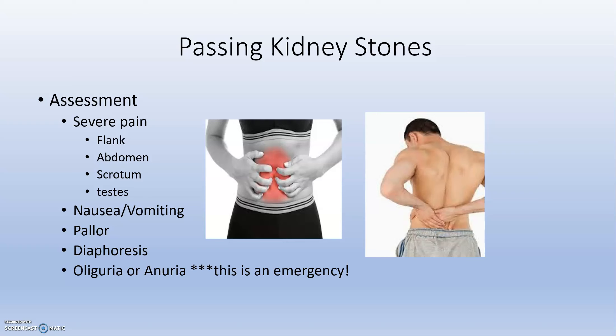Your patient will also have nausea and vomiting, so you'll look at Zofran or other antiemetics to control that. They may have pallor and diaphoresis as a reaction to the pain. Your patient might also have oliguria or anuria because the stone has gotten stuck and urine cannot pass it. This is an emergency — if urine can't pass, it will back up and cause kidney damage.